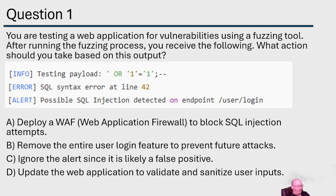Let's answer this question. A fuzzing tool just throws a bunch of garbage at the application and sees what pops up. Option A: deploy a web application firewall to block SQL injection attempts. That's possibly a good answer — a WAF could technically help stop that, so it's a contender.